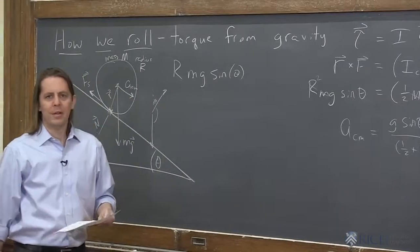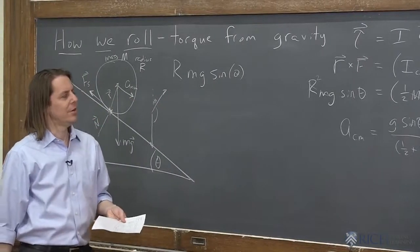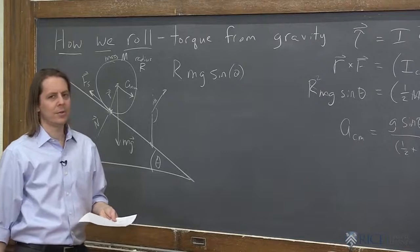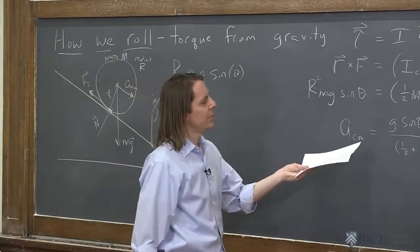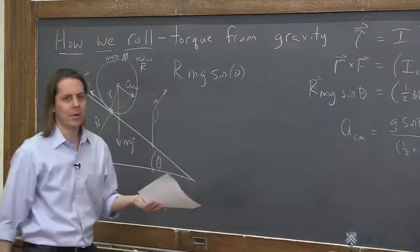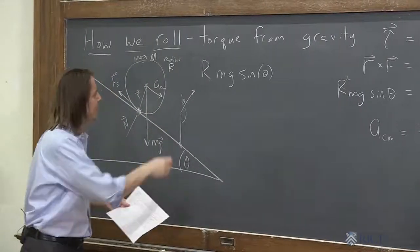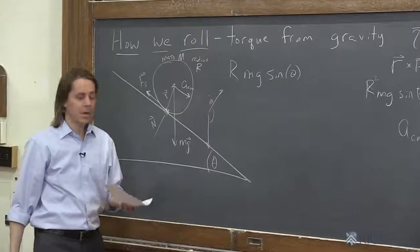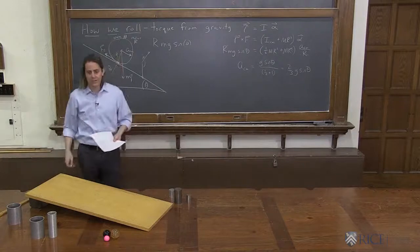So what's kind of remarkable about that is it doesn't depend on the mass or the radius of the cylinder. It's basically saying all cylinders, no matter how big they are and how heavy they are, will have the same acceleration down the ramp. Which sounds kind of weird. Maybe we should see if that's true or not.